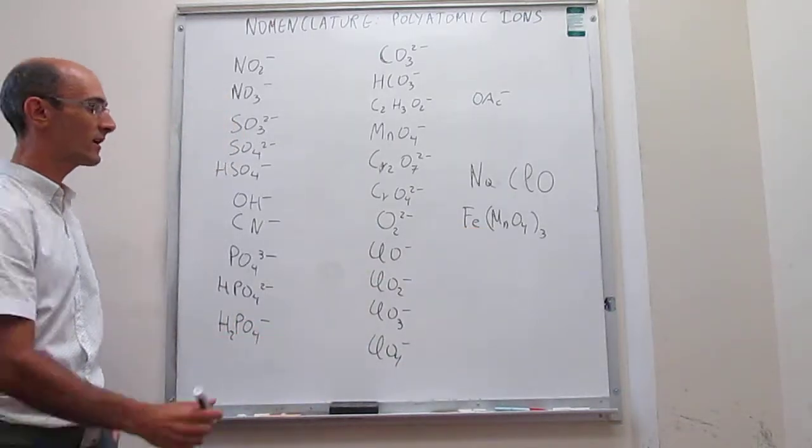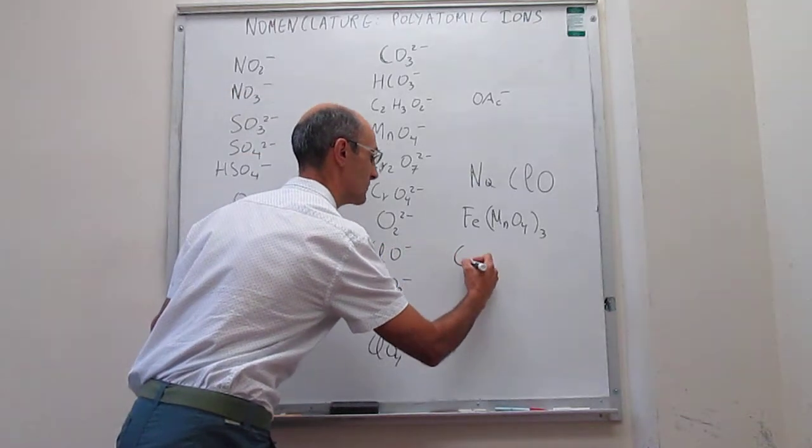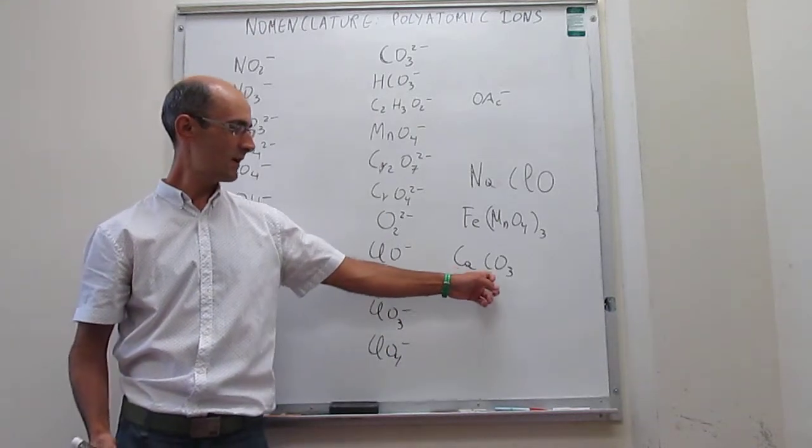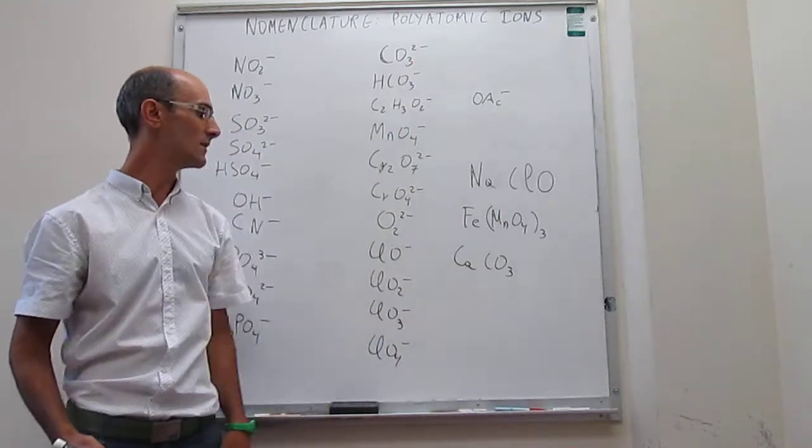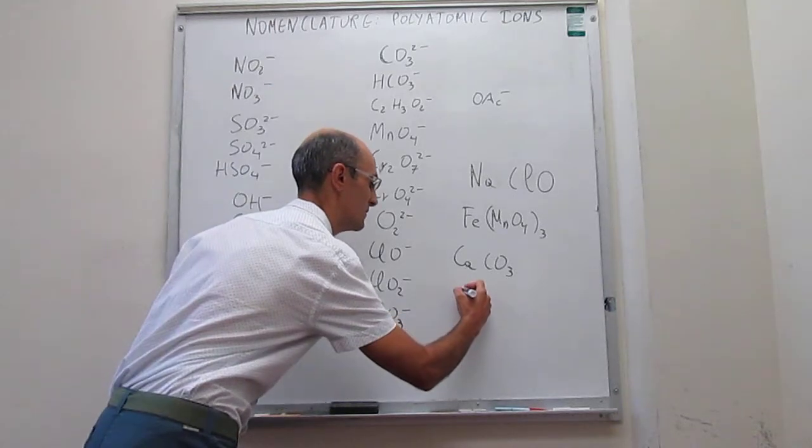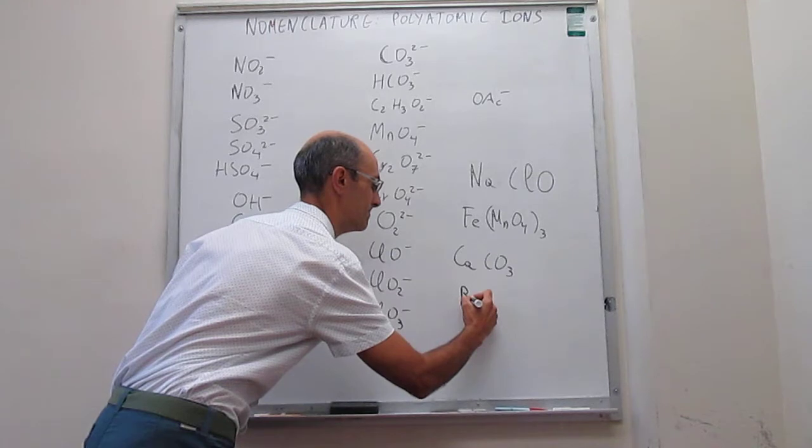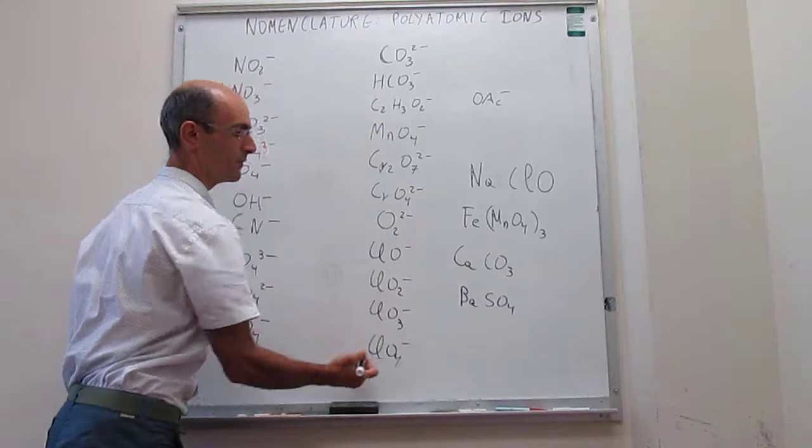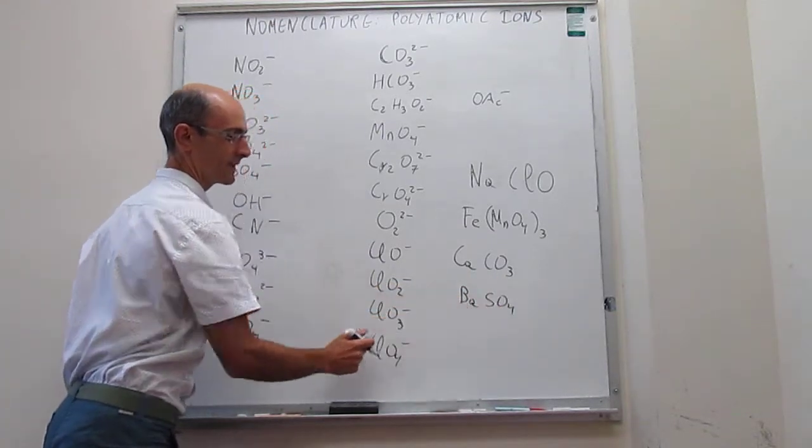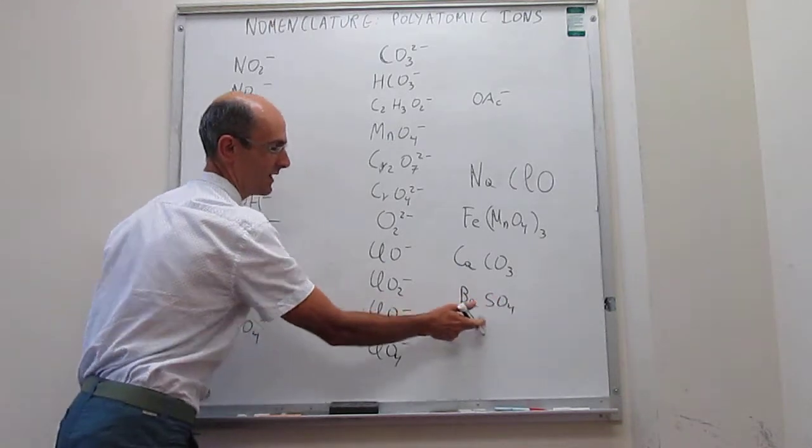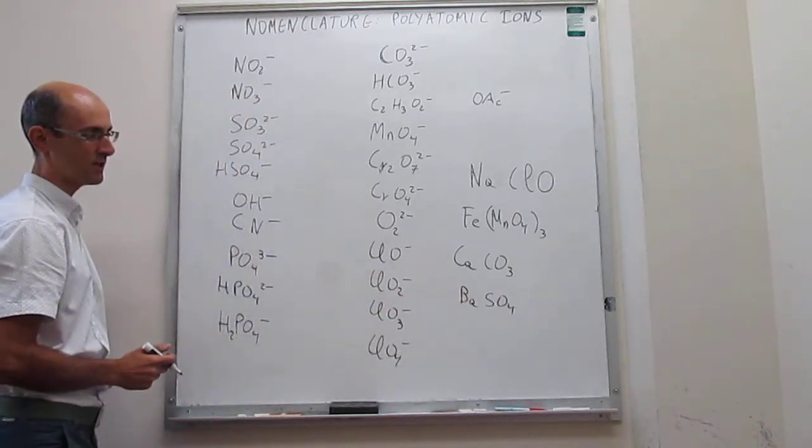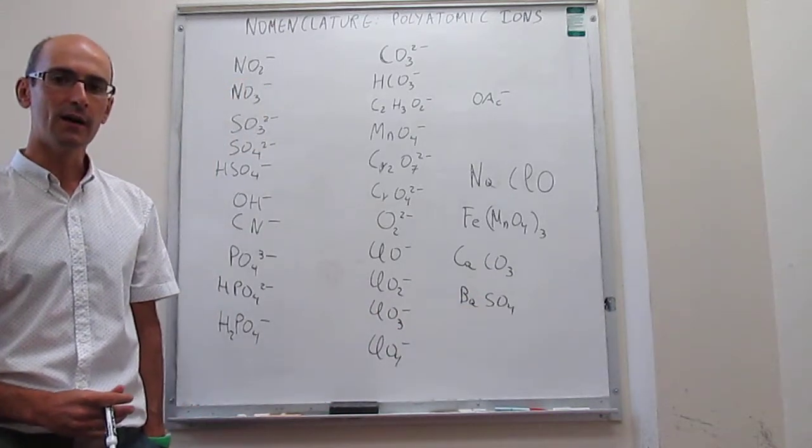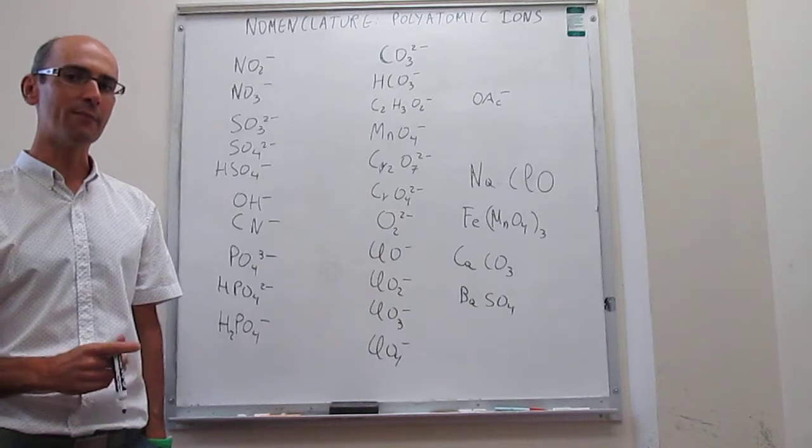We can continue to put here some examples. For example, CaCO3, that will be calcium carbonate. We can use this one for example, BaSO4. We recognize here SO4-2-. Barium is an alkaline earth metal that is 2+, so therefore this formula has no charge. So that will be barium sulfate. Again, like this, you can continue to name compounds that contain polyatomic ions.